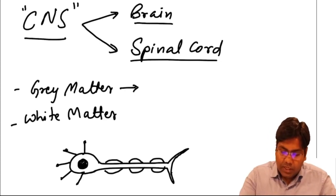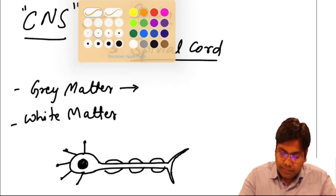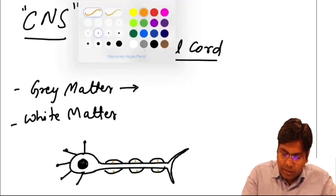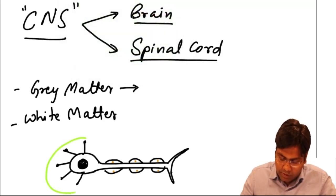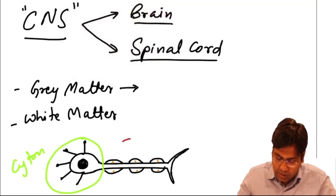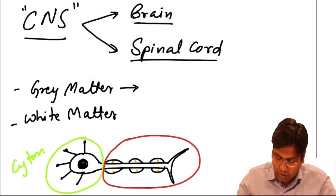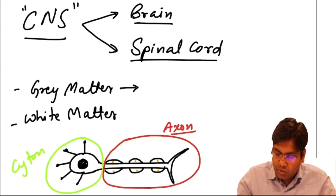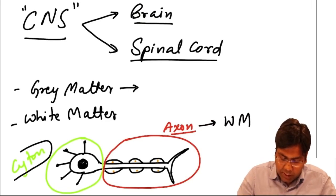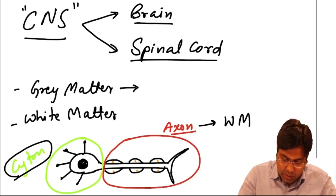My dear friends, you can see this is a representative diagram. It has a cyton — this part is your axon. So the axon gives you white matter, while the group of cytons makes gray matter.